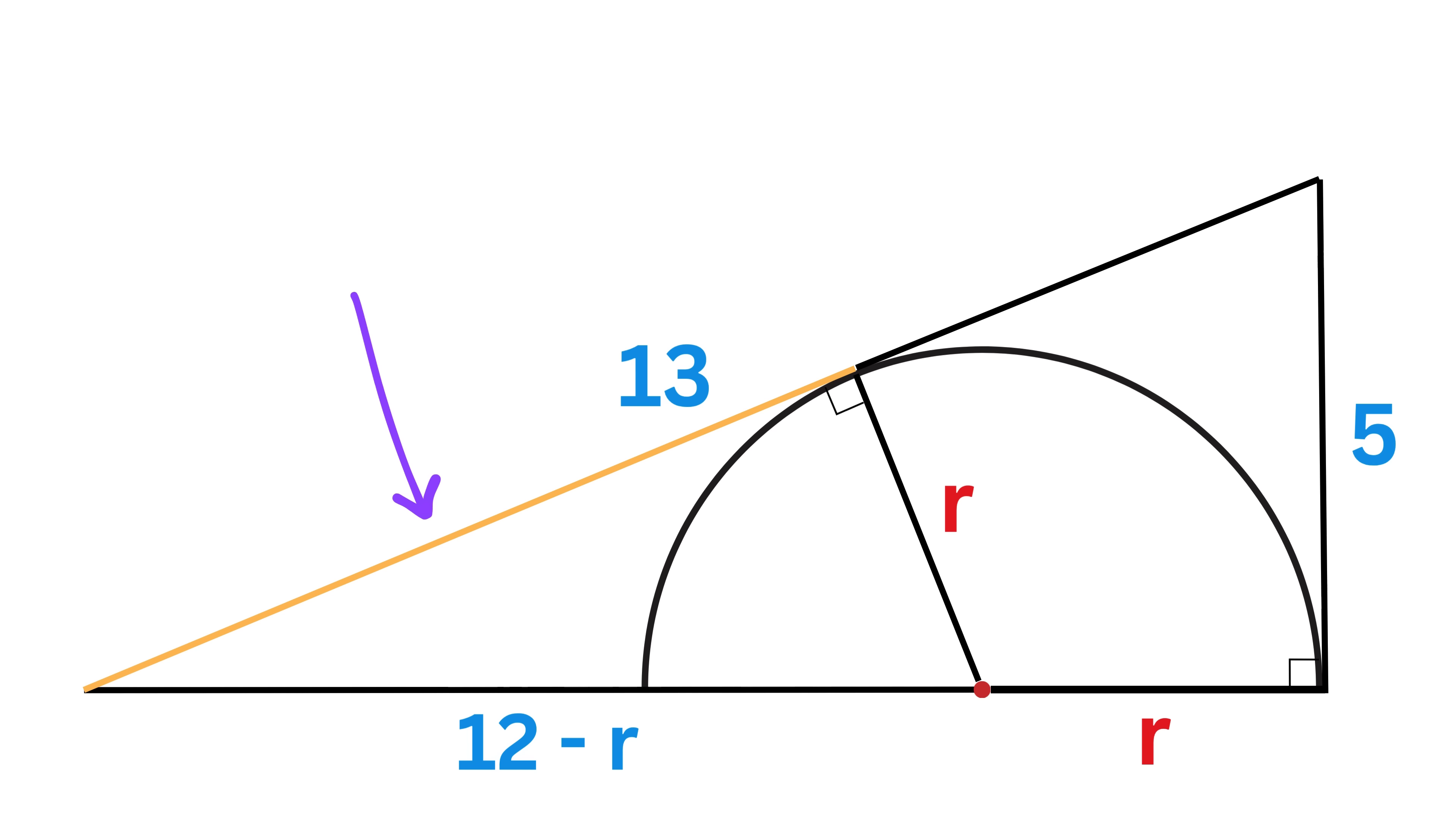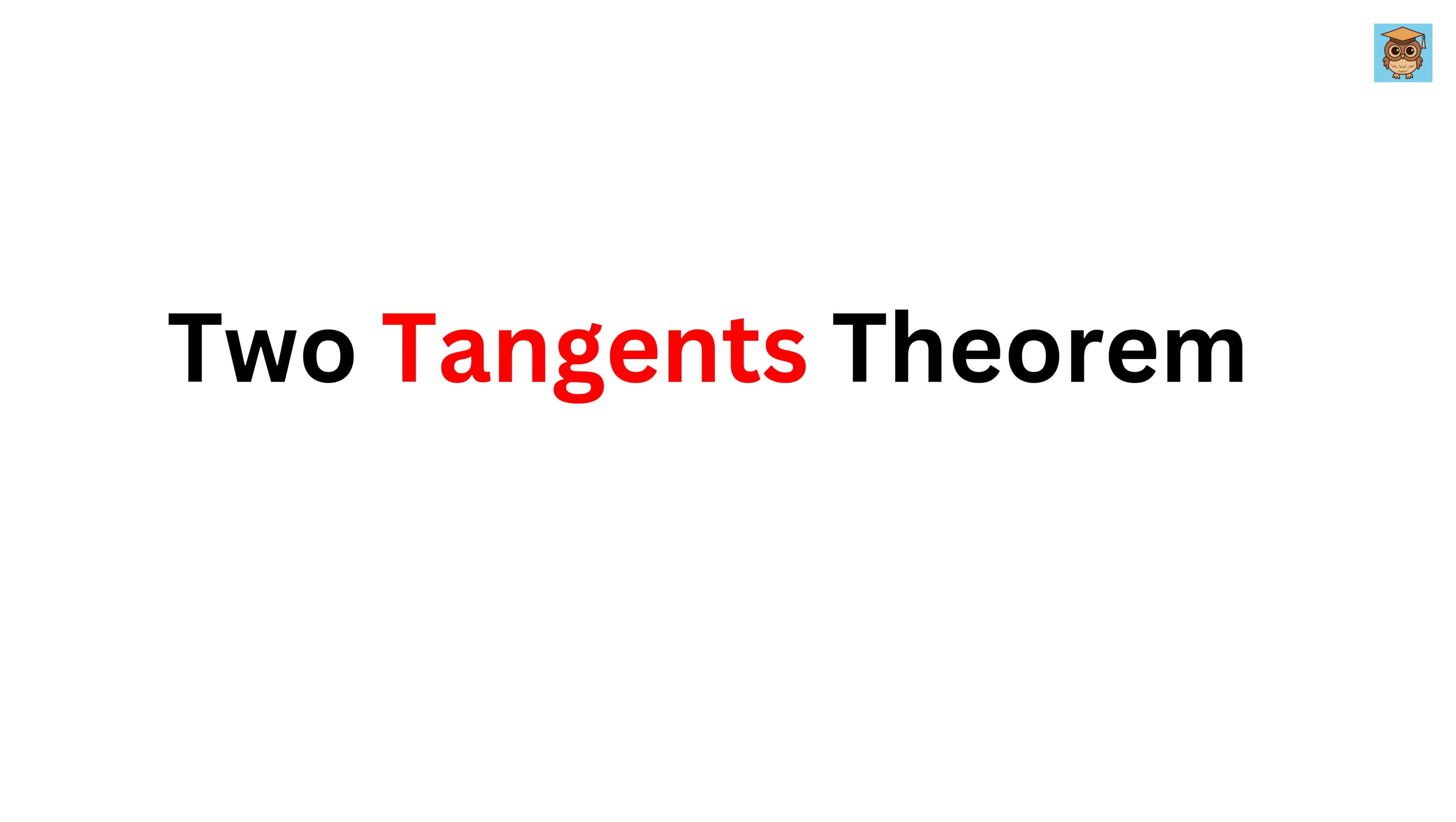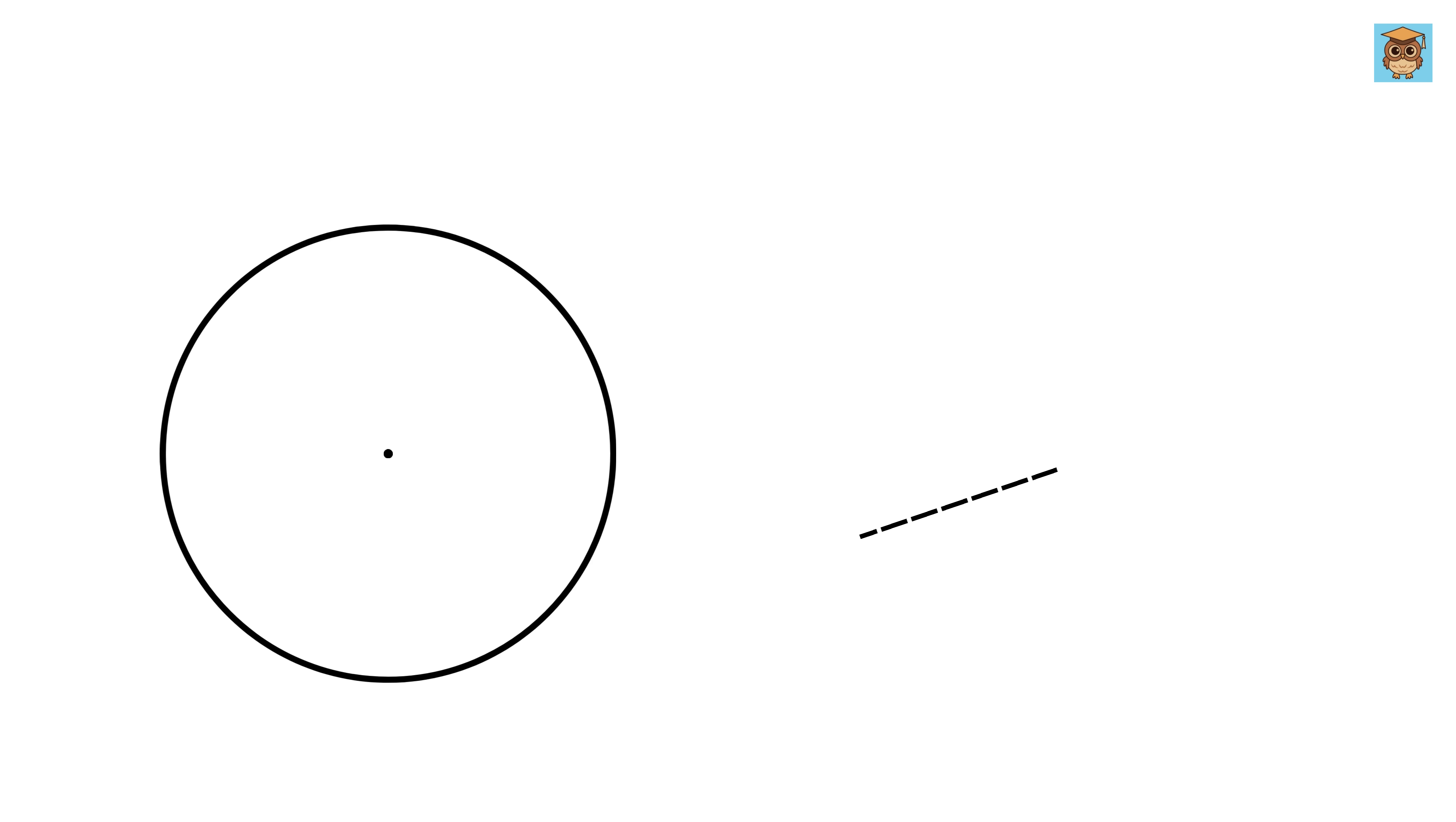We just need this length. We know this is 13 units, but that alone won't give us anything. We need the length of this piece so we can find the length of this side. For that, we'll look at the two-tangents theorem. If two tangents are drawn to a circle from a single external point, these tangents will always be equal in length.